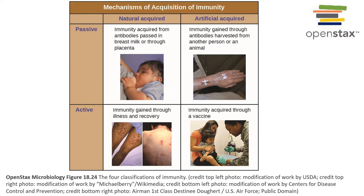Whereas active immunity involves activation of the adaptive immune system by exposure to the antigen. You could either have a naturally acquired or an artificially acquired form of immunity, whether it's passive or active.